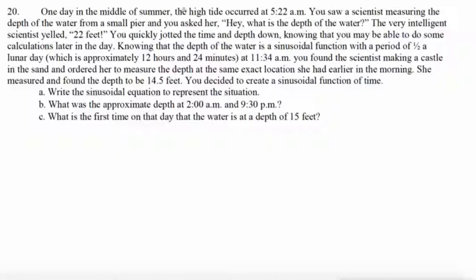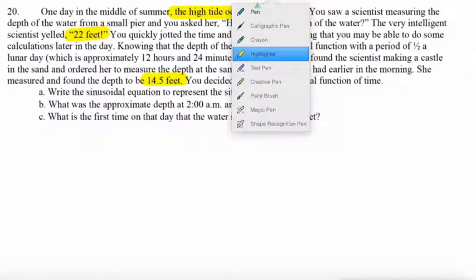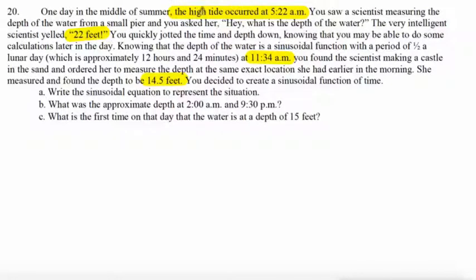So here we go. We have high tide occurring at 5:22 a.m., which is giving us a depth of 22 feet. So 6 hours and 12 minutes later, which is halfway through the cycle, at 11:34 a.m., we have a depth of 14.5 feet. So high tide is producing a maximum depth, and then at 11:34 we're going to have a minimum depth of 14.5 feet.